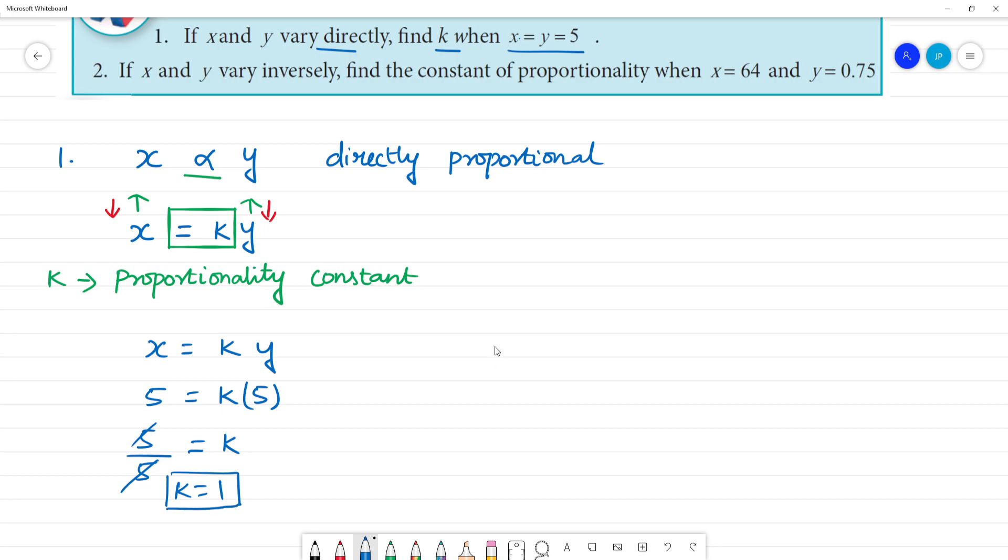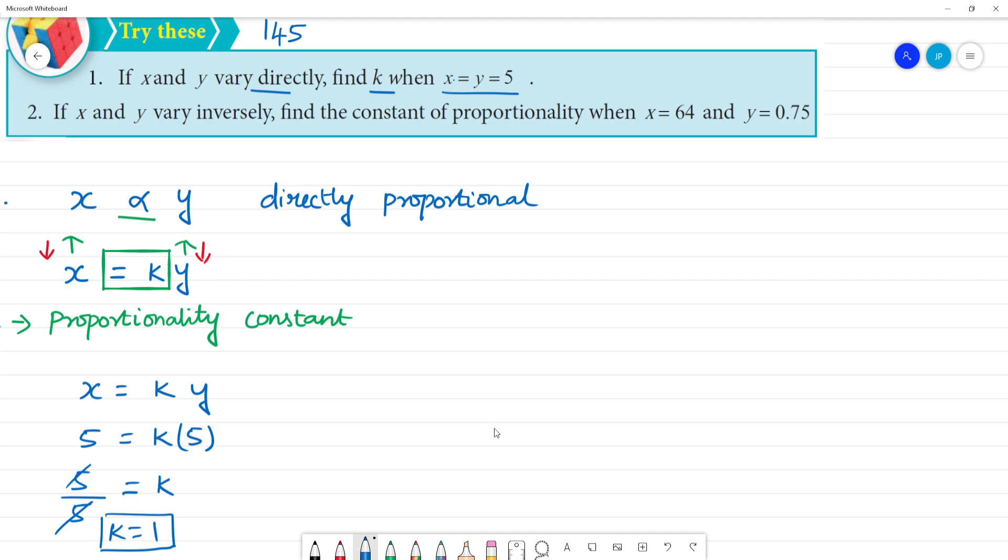Clear? Next one. Second one. If x and y vary inversely. Inversely, what is inversely proportional? What is 1 by y? What is reciprocal? This is directly proportional. This is inversely proportional.